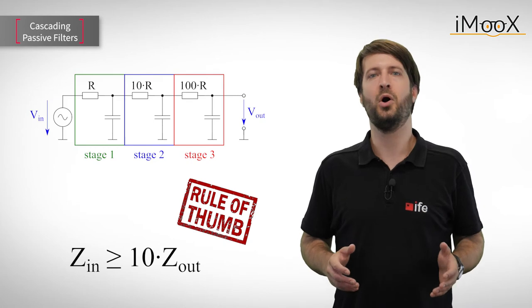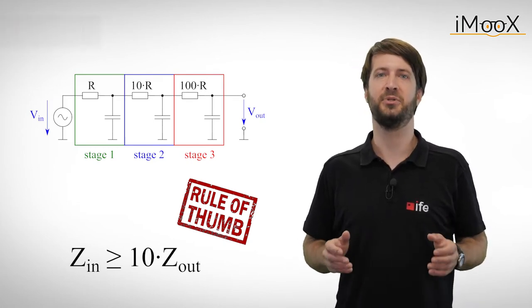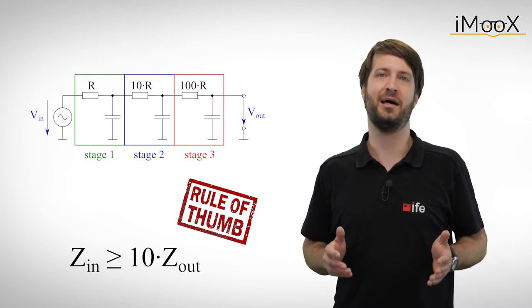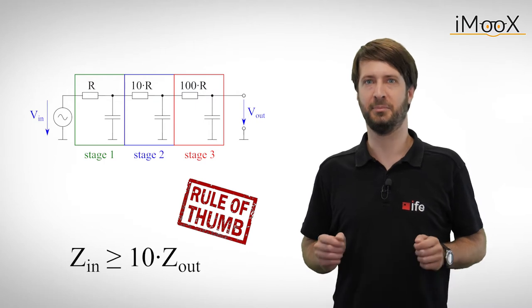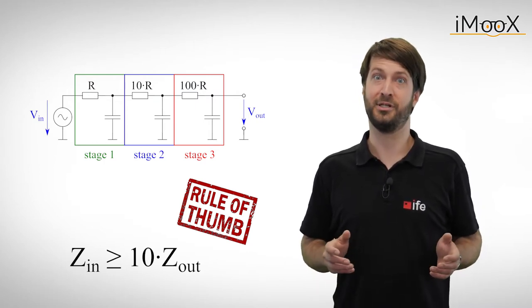So according to our rule of thumb, all we have to do to ensure the independence of each stage from the previous one, is to make the value of R at least 10 times higher for each stage we add. But not so fast. What about the corner frequencies of each individual stage?